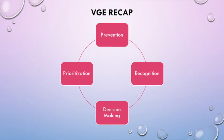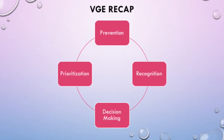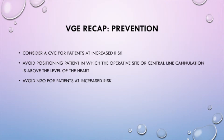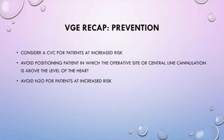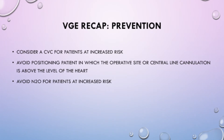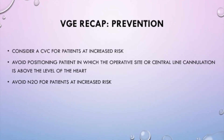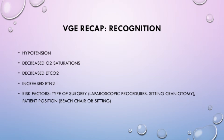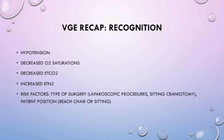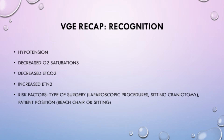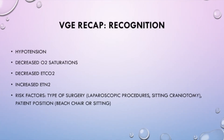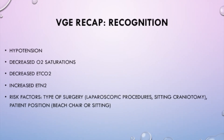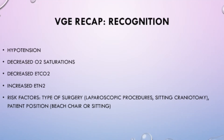Let's review how the non-technical skills of prevention, recognition, decision-making, and prioritization can be used to manage the scenario of a VGE. Prevention: consider a CVC for patients at increased risk; avoid positioning the patient in which the operative site or central line cannulation is above the level of the heart; and avoid nitrous oxide for patients at increased risk. Recognition: signs and symptoms include hypotension, decreased oxygen saturations, decreased end-tidal CO2, and increased end-tidal nitrogen. Risk factors include the type of surgery, such as laparoscopic procedures and sitting craniotomies, and the patient's position, such as the beach chair or sitting position.